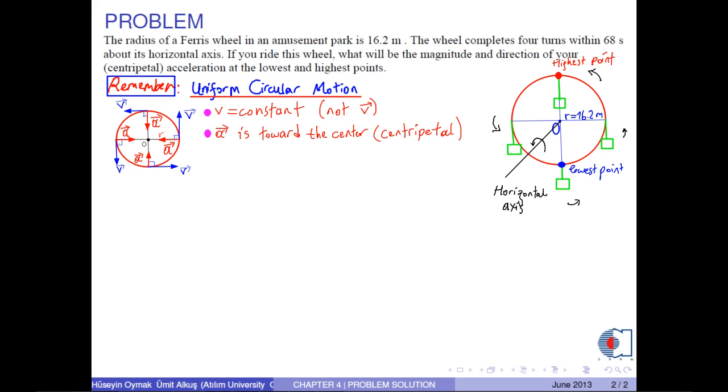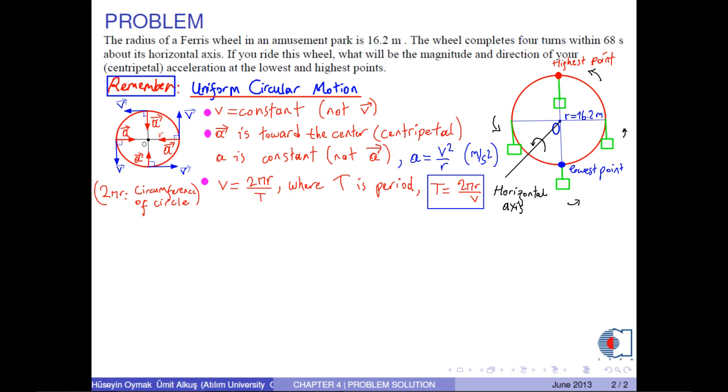Its magnitude is found by v² over r. Speed v is found as 2πr over T, where T is the period, which is calculated as 2πr over v and has units of seconds.